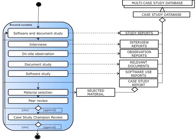I did some software and document study, interviews, on-site observation, document study, software study — you can really imagine many of these sub-parts. Then I did some material selection, so I threw some things out and kept some things. Did some peer reviewing from other researchers — very important. Your draft will also be reviewed, if I understood the schedule correctly, and then of course a case study champion review, very important. If somebody participates actively in your research, that's generally a good sign, because this person will be committed and hopefully help with fine-tuning some of your results.